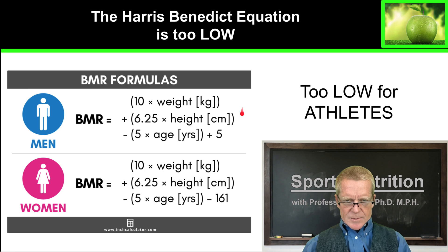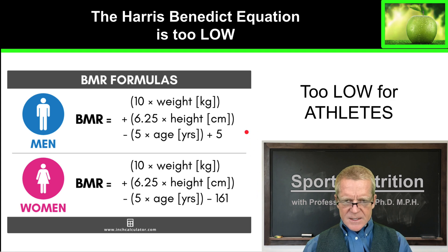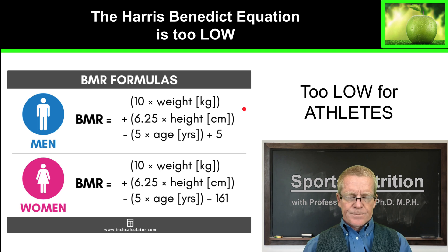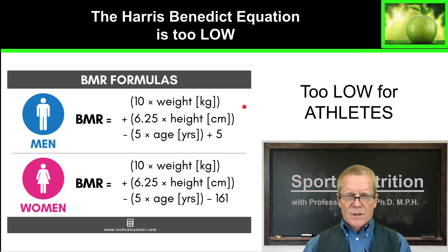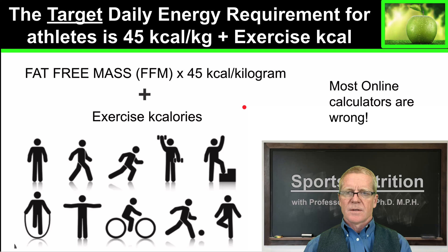This is the formula you will see used online — usually the Harris-Benedict equation with a factor that takes into account whether you are sedentary, active, highly active, and so forth. Unfortunately, that multiplier used to go from the Harris-Benedict equation to the number of kilocalories you need is an assumption that is not valid for athletes. So try not to use online calculators to work out your caloric requirements. Instead, use fat-free mass times 45 kilocalories per kilogram, then add your exercise kilocalories.